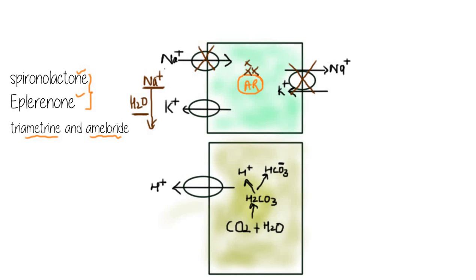The catch is that unlike other diuretics which cause loss of potassium, these drugs do not cause potassium loss. Potassium only moves when a negative potential is created in the urinary lumen, and that negative potential is created by sodium reabsorption. Since sodium is not being reabsorbed, potassium will not be secreted. Also, since there is no negative potential, H+ ions will also not be secreted and will be retained in the body. This is the mechanism of spironolactone and eplerenone.